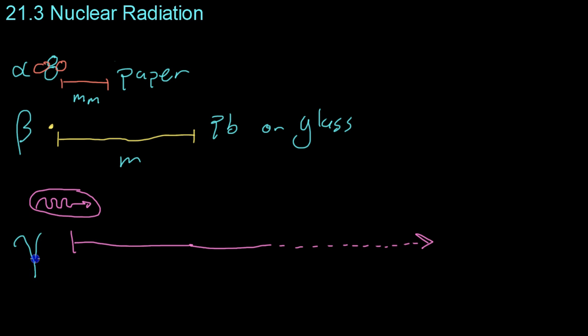Now, gamma, the last of the radiation, because it has no mass and no charge, it's very difficult to stop. So, you can sort of mitigate the effects with lead, but realistically, some gamma radiation is going to get through regardless.